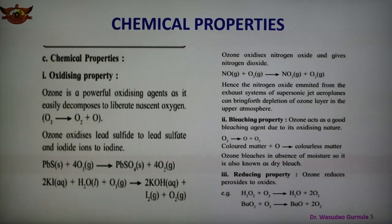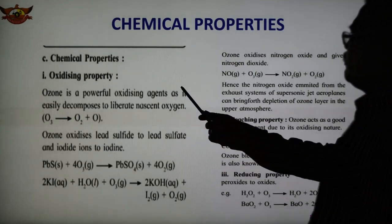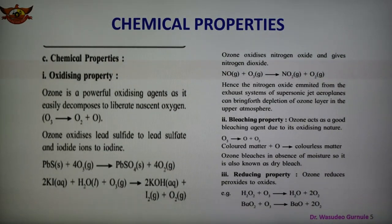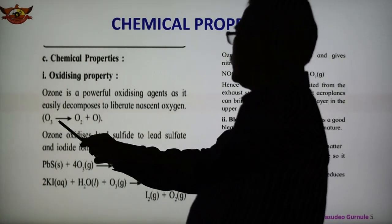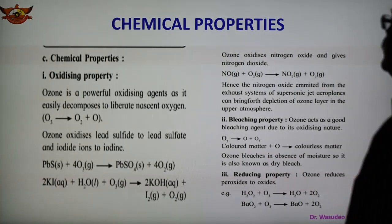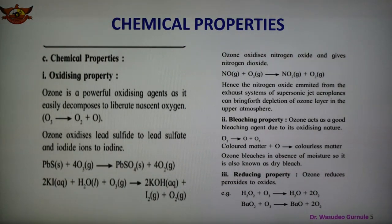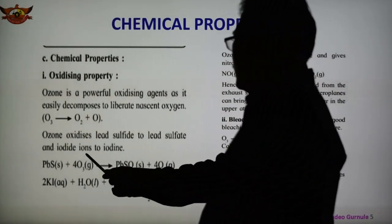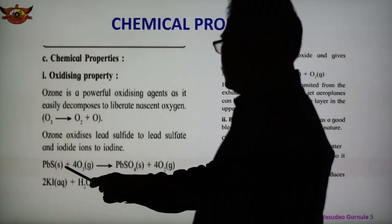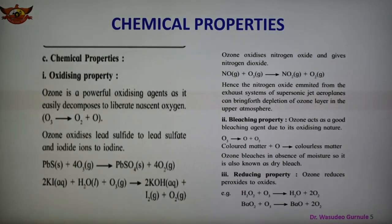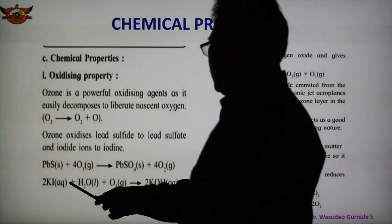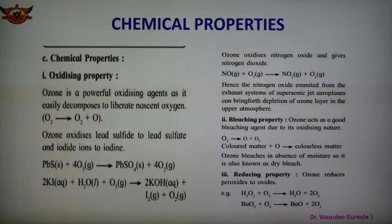Ozone has important chemical properties. First is the oxidizing property — ozone is a powerful oxidizing agent. It decomposes to form nascent oxygen, making it a powerful oxidizing agent. Ozone oxidizes lead sulfide to lead sulfate, and oxidizes iodide ion to iodine. Lead sulfide reacts with ozone forming lead sulfate and oxygen gas. Potassium iodide reacts with ozone in the presence of water forming potassium hydroxide, and iodine is formed.